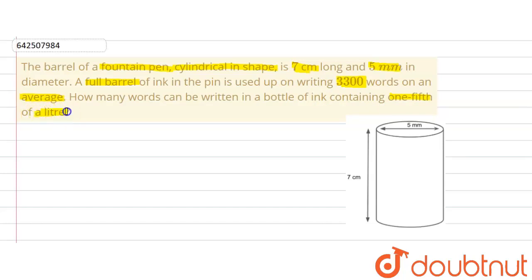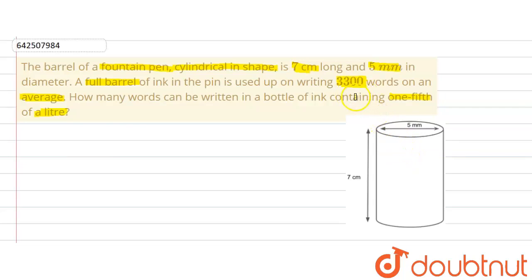If a bottle of ink contains one fifth of a litre, then how many words can be written? So let's find out the volume of the barrel, then check how much volume of ink is used in writing 3300 words. From there we can find out how many words can be written using one fifth of a litre of ink.